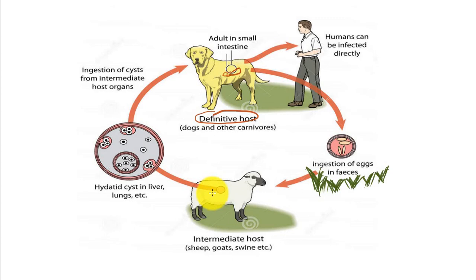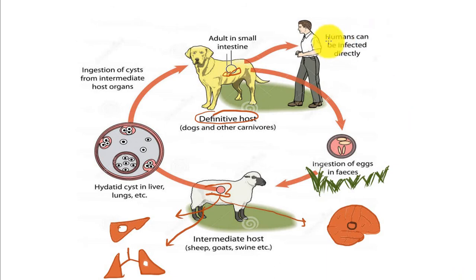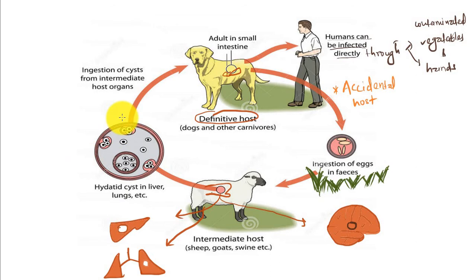Ova are passed in the dog's stool and contaminate grasses. When contaminated grass is ingested by sheep, the ova reach the sheep's stomach, penetrate the stomach wall, and reach the portal venous system to make hydatid cysts in the liver. It may also affect lung and brain. Humans can be infected directly through contaminated vegetables and hands as accidental hosts, developing hydatid cysts in liver, lungs, and brain.